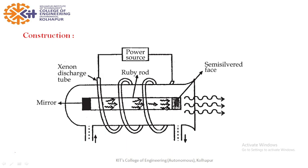So this is the construction of ruby laser. This is the ruby rod, one end semi-silvered, other fully silvered. It is surrounded by xenon discharge tube and by spontaneous emission chromium atom gives red light.